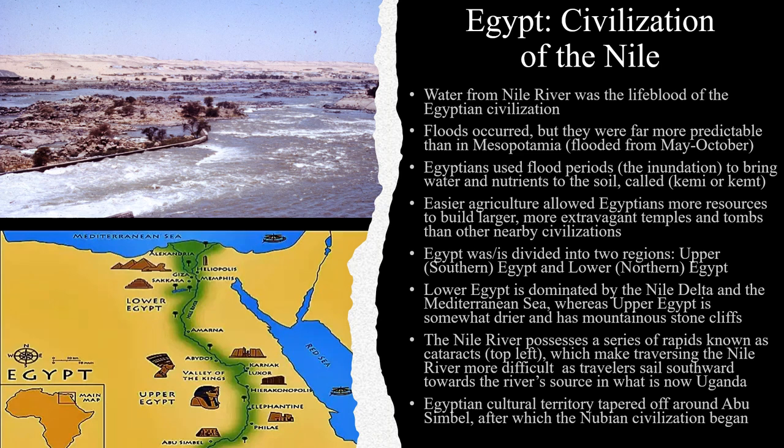The Nile River flooded seasonally, usually from about May to about October. The Egyptians used these flood periods, called the inundation, to bring water and nutrients to the soil, which they called Kemi or Kemet. Agriculture was easier for the Egyptians than it was for the Mesopotamians, allowing them to put more time into building larger, more extravagant monumental architecture, especially temples and tombs.